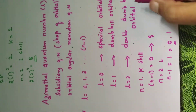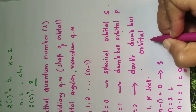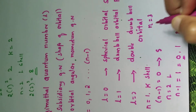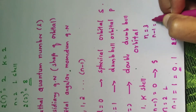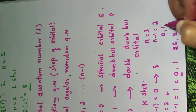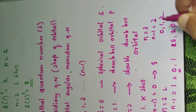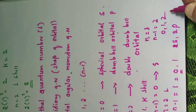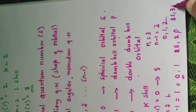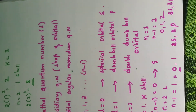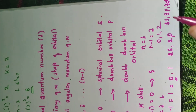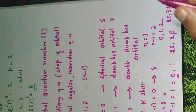When n equals 3, n minus 1 equals 2, so we have values 0, 1, and 2 — meaning 3S, 3P, and 3D orbitals can be filled in the M shell.